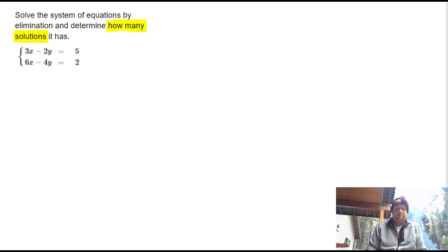One last question that we are going to try and determine how many solutions we have. And that means that we have a choice between either one, none, or infinitely many solutions. And we're going to solve this one by elimination. And I'm looking at this and I see the 3x and the 6x. Those aren't the same. And I have a negative 2y and a negative 4y. Those aren't the same.